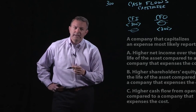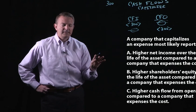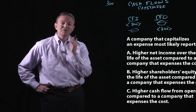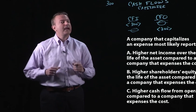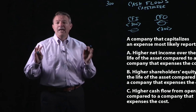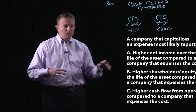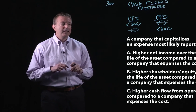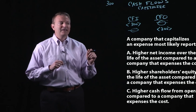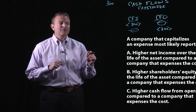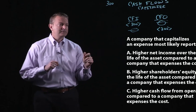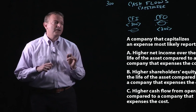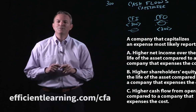So if we pull up those answers once again — over the life of the asset, you're going to fully depreciate it exactly like you did when you expensed it. It's just going to take a couple more years, but if you add them all together in the aggregate, it's going to be exactly the same. Therefore, any income or profit that goes to equity on your balance sheet is going to be exactly the same either way. So at the end of the day, a company that capitalizes an expense most likely reports higher cash flow from operations compared to a company that expenses the cost. The answer to this one is C.